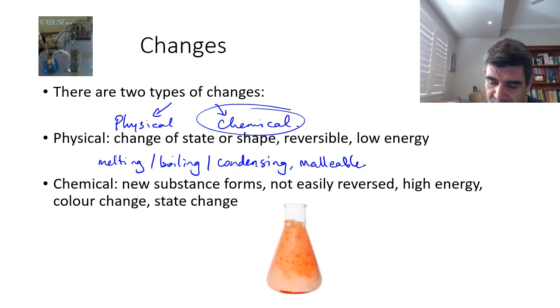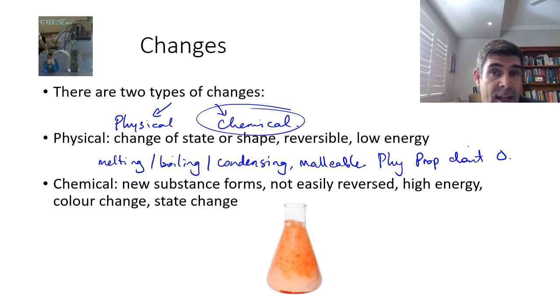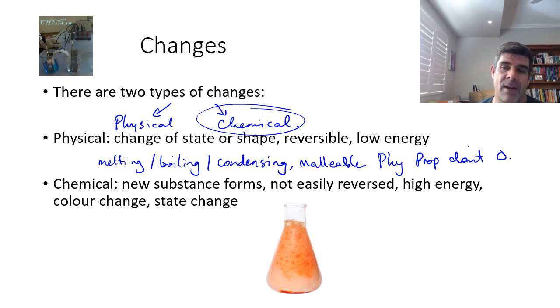What happens is that the physical properties don't change. And because the physical properties don't change, we have what's called a physical change. So a change of state, a change of shape, something that's usually fairly easily reversible and also something that's often low energy. So the amount of energy required in order to do this is comparatively low.